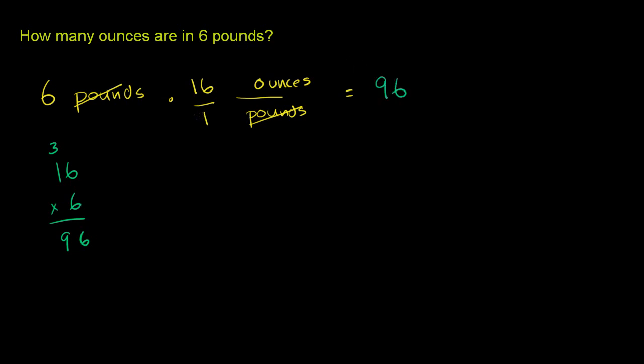You have this divided by 1 here, but that's not going to change anything, and then all we're left with in the dimensions are the ounces. So 6 pounds are 96 ounces.